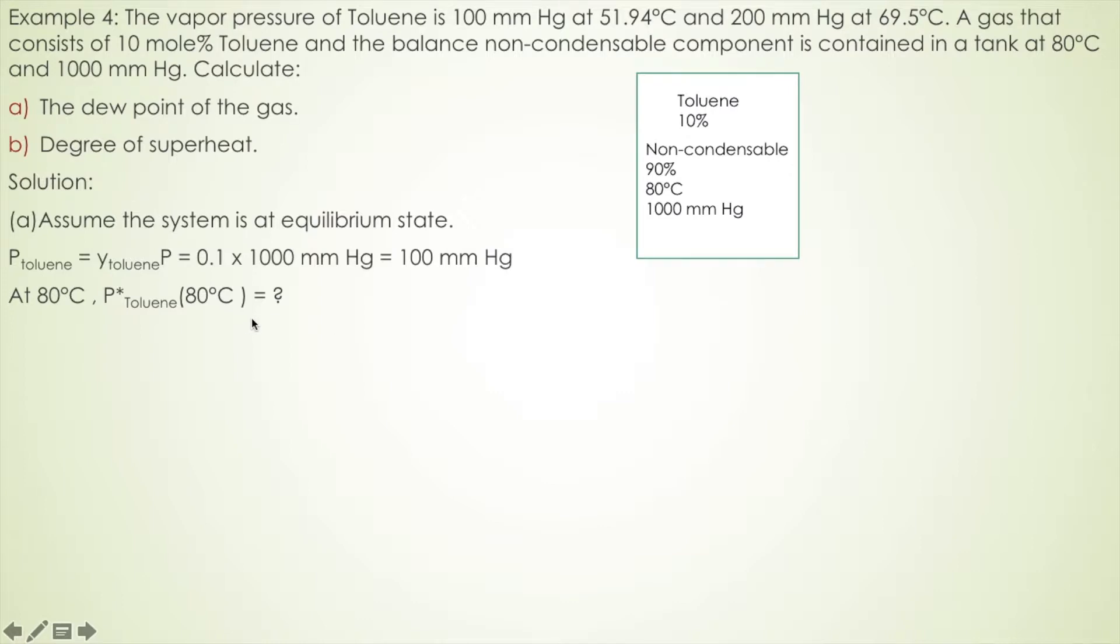And we know that the system temperature is 80 degrees and the vapor pressure, we can calculate that using Antoine's equation. Then from table B4, we can find the constants used in this equation: A, B, and C.